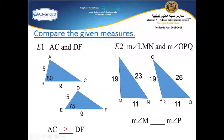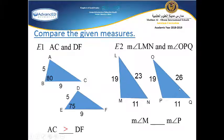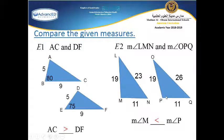Here, comparing angles: the third sides LN and OQ are 23 and 26 respectively. The opposite angle to the longer side 26 — angle P — is bigger than the opposite angle to side 23. So angle M is less than angle P.